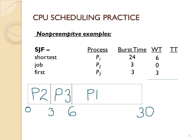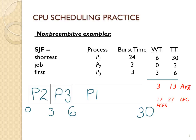Looking at the wait times with Shortest Job First: P1 waited 6 time units, P2 waited 0, and P3 waited 3 time units, giving an average wait time of 3 time units. The average turnaround time is 13 time units, where P1 finished at time 30, P2 at time 3, and P3 at time 6. Comparing these averages with First Come First Serve, Shortest Job First gives much better results.